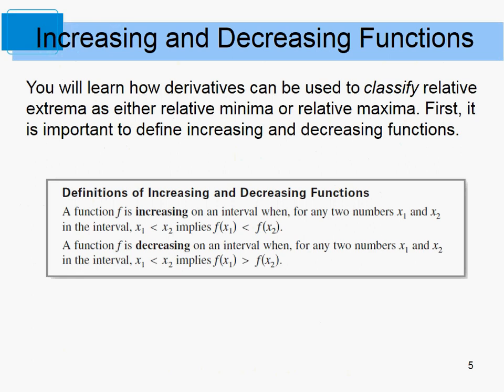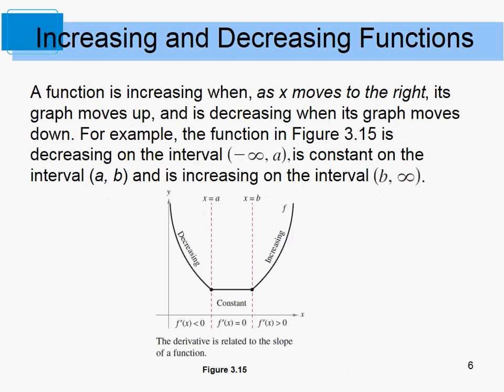We know from Math 112 that a function is increasing when, for any two x-values, the y-values are increasing. So if I have x equals 1 and x equals 5, and the y-value goes from 1 to 5, it has to be going up — it's increasing. If increasing x-values create decreasing y-values, that's a decreasing function. This is basic nomenclature from pre-cal. We can be decreasing, constant, or increasing — there are only three options.